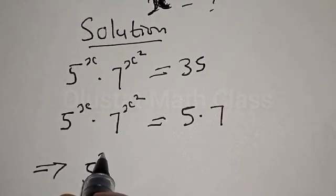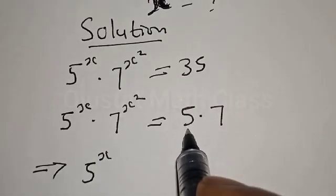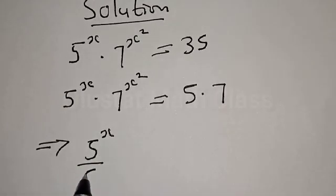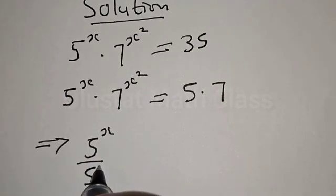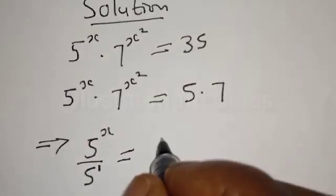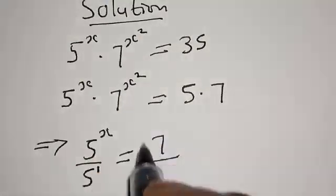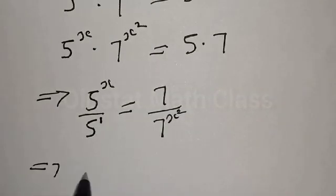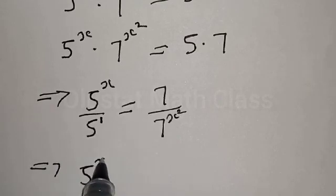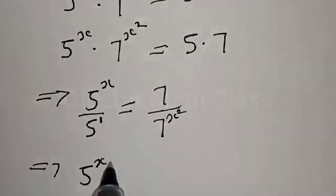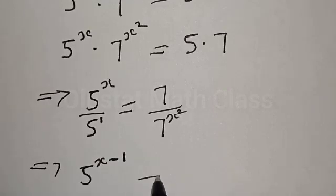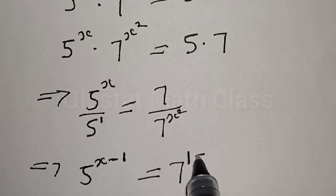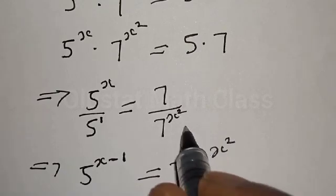This implies that we have 5 raised to power x — this is also 5 divided by 5, and 5 is simply 5 raised to power 1 — to be equal to 5 raised to power x. This is raised to power 1 minus 1, to be equal to 7 raised to power 1 minus x squared.